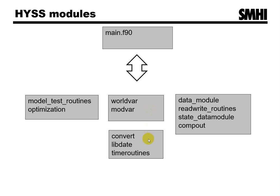Modules for general use: the convert module contains procedures for transforming between different variable types and between upper and lower case. Lib date holds a date type and procedures for using this type. Time routines contains other procedures relating to time calculations. Modules for handling input and output include the data module for loading and preparing input data and for saving results. Read write routines handles reading from and writing to file. The state data module contains procedures for loading and saving initial states, while module comp out does calculations for output, for instance accumulation of data.